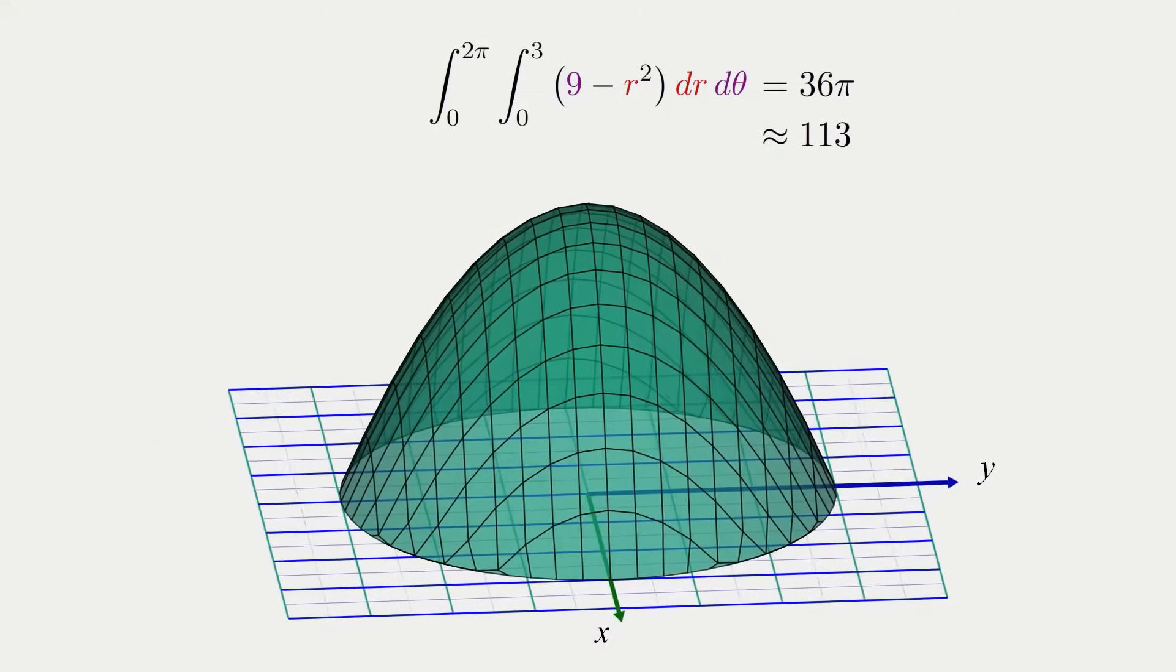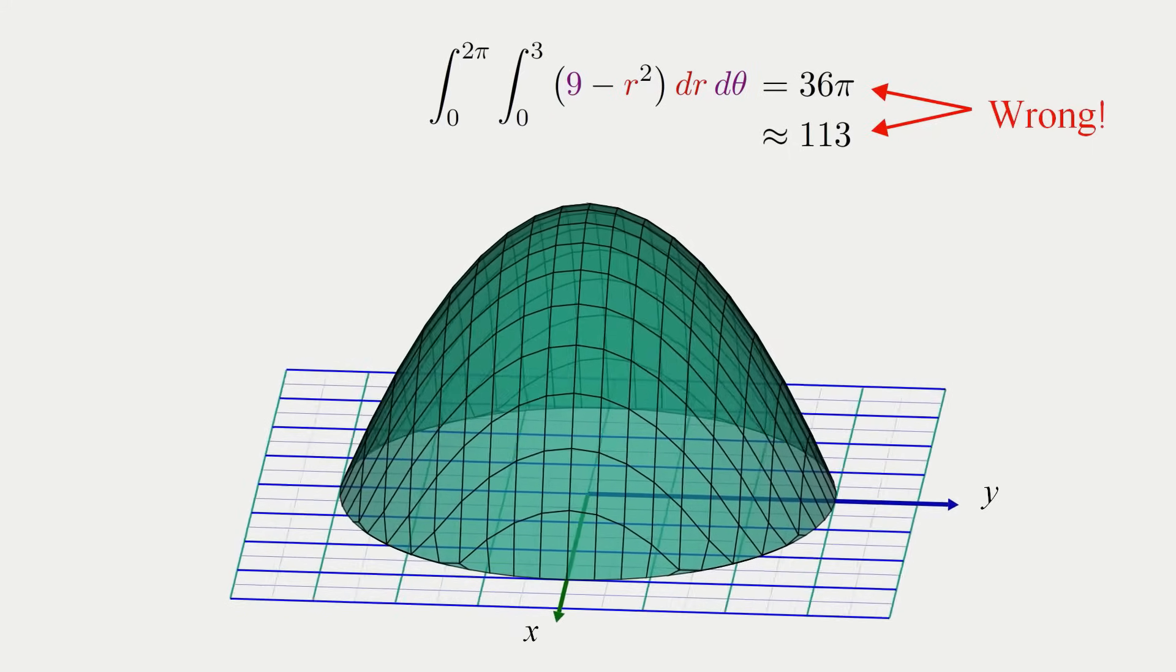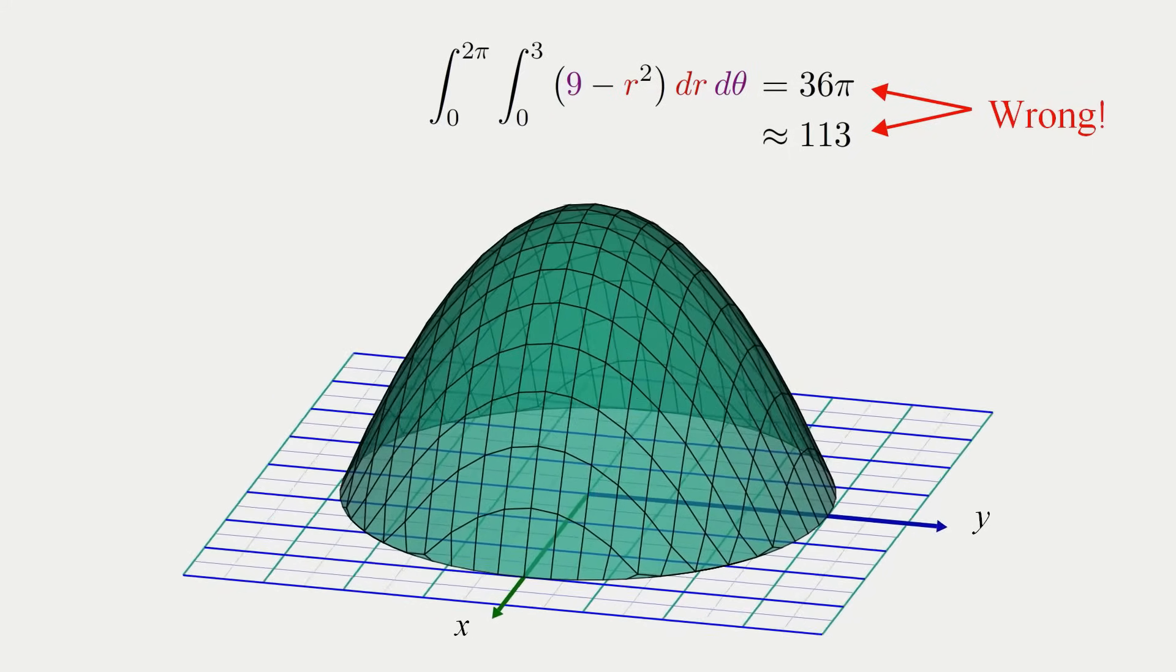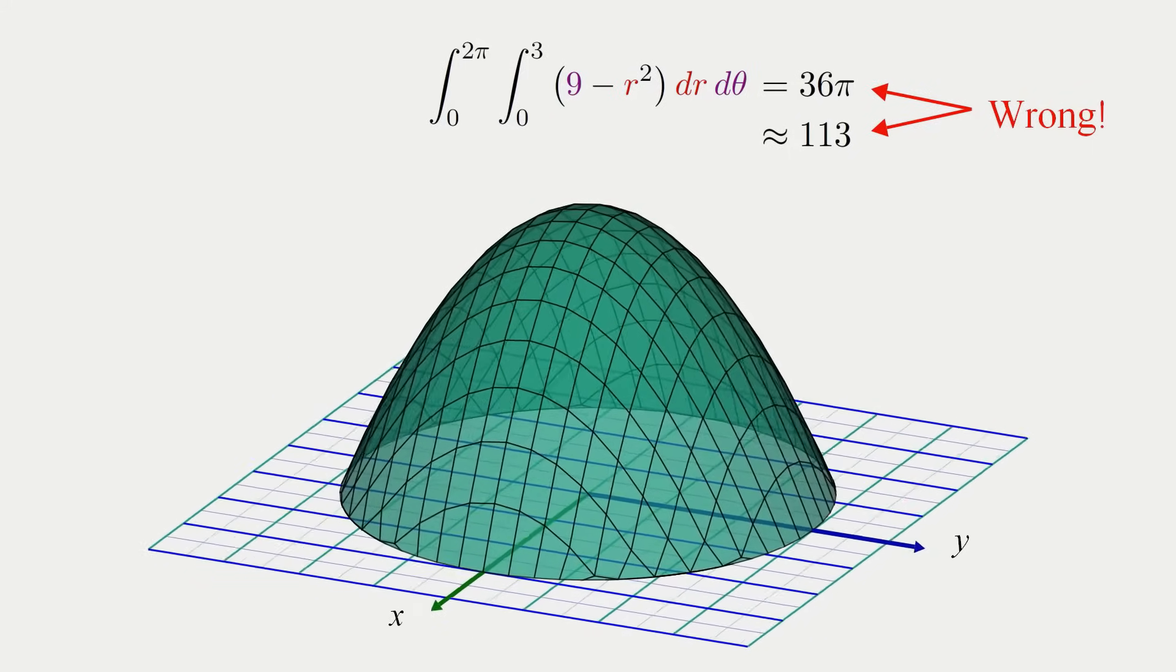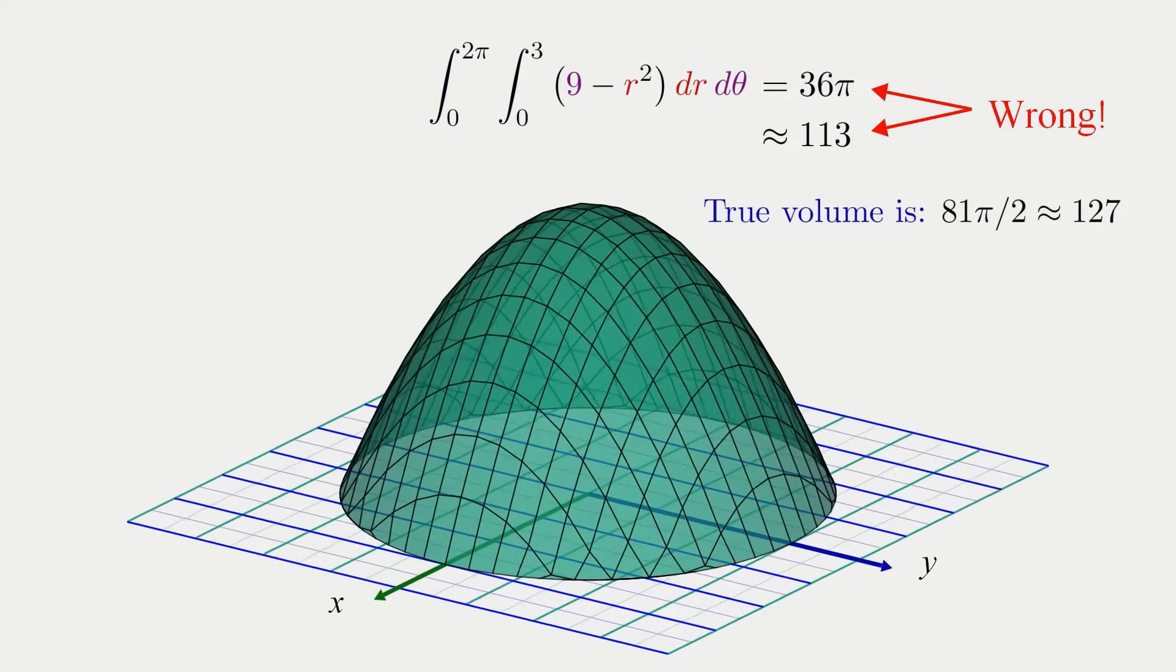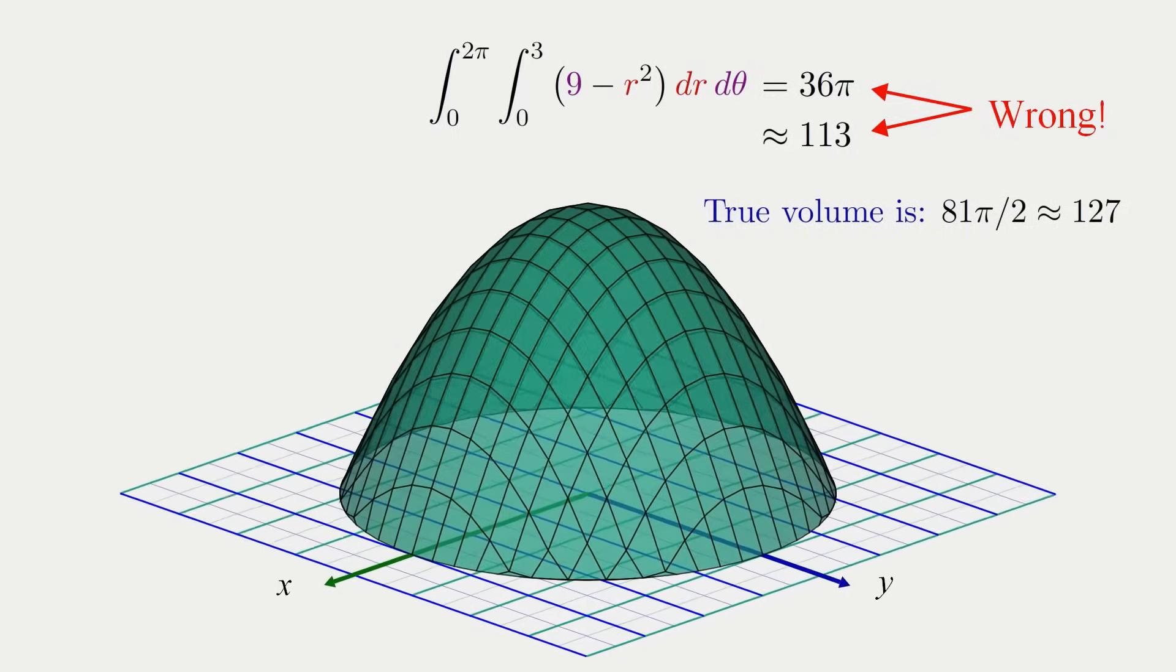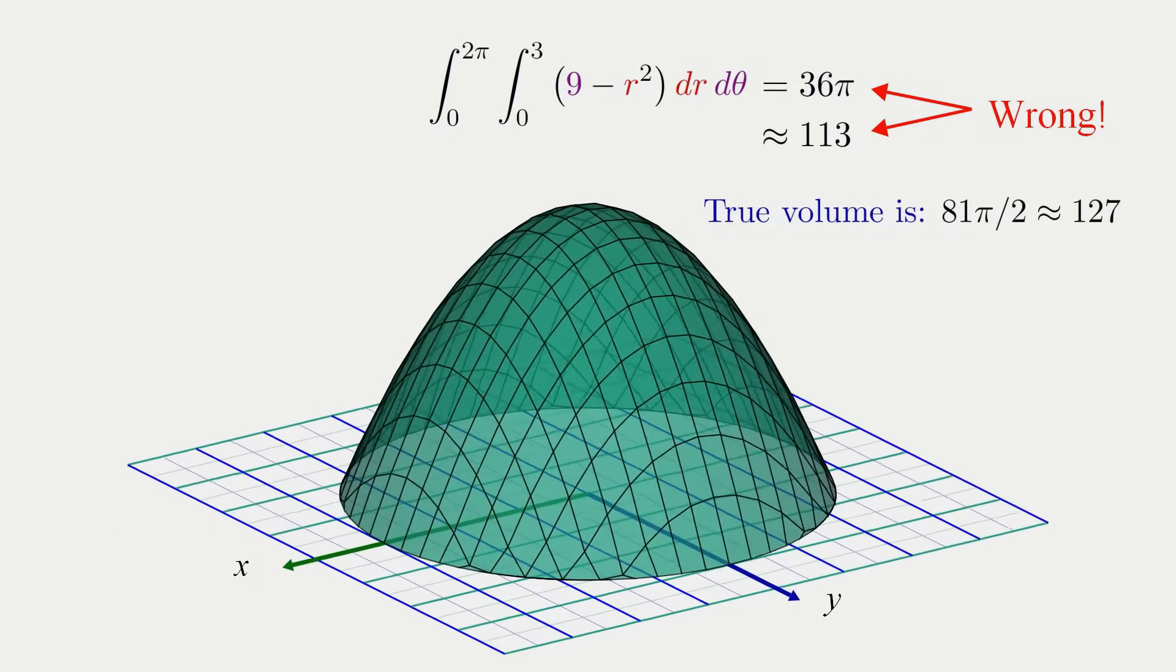There's only one minor drawback. This is the wrong answer. The true volume under the surface, which we'll compute later on, is actually 81 pi over 2, or about 127. So what went wrong here?